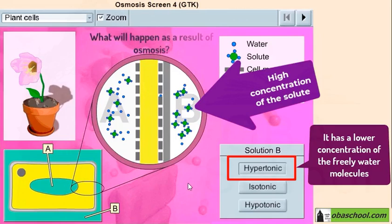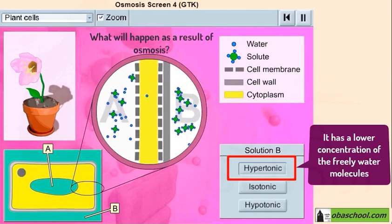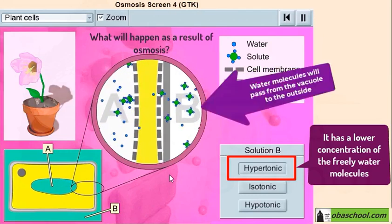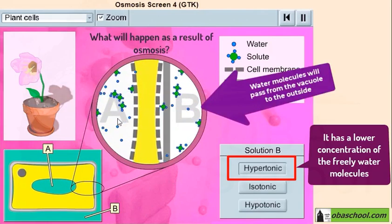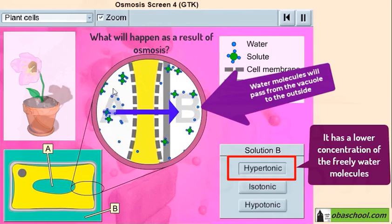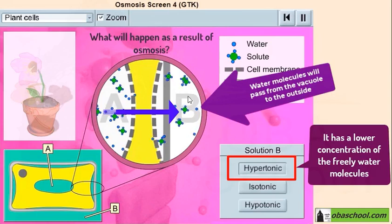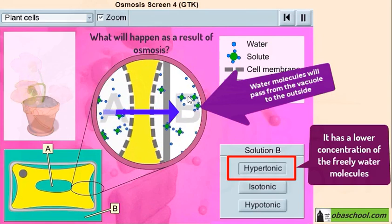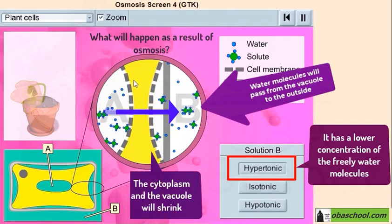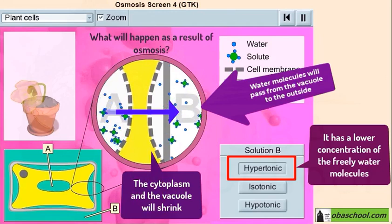So what will happen as a result of osmosis? As a result of osmosis, water molecules will pass from the vacuole to the outside of the cell. And this will allow the cytoplasm and the vacuole to shrink.